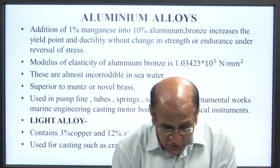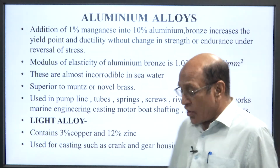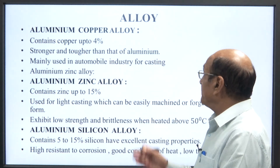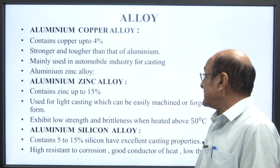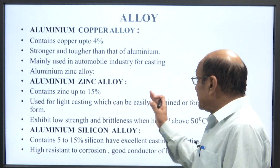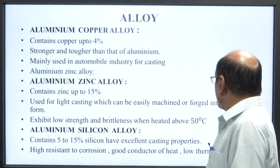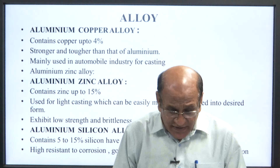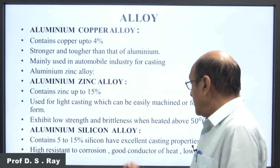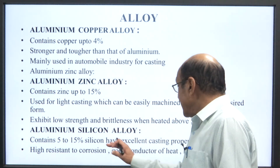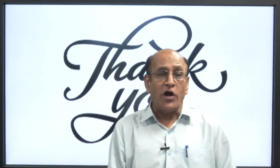The next alloy is a light alloy containing 3 percent copper and 12 percent zinc, used for casting such as cranks and gear housings. Aluminium-copper alloys contain copper up to 4 percent, are stronger and tougher than aluminium, and are mainly used for automobile industry casting. Aluminium-zinc alloys contain zinc up to 15 percent, used for light casting which can be easily machined or forged into desired form; they exhibit low strength and brittleness when heated above 50 degrees. Aluminium-silicon alloy contains 5 to 15 percent silicon, has excellent casting properties, high resistance to corrosion, good conductor of heat, and low thermal expansion. So this is all about aluminium. Thank you very much.